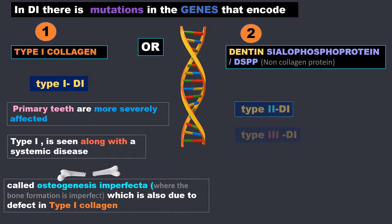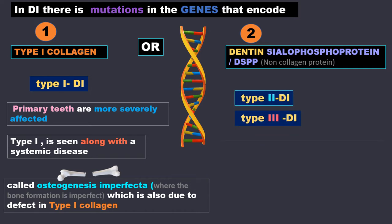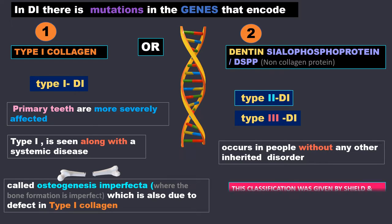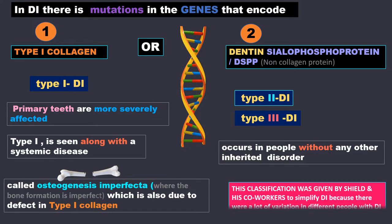Under the second category come type 2 DI and type 3 DI. These occur in people without any other inherited disorder or systemic disease — that is, they are found alone. This classification of type 1, type 2, and type 3 was given by Shield and his co-workers to simplify DI, because there is a lot of variation in different people with DI.